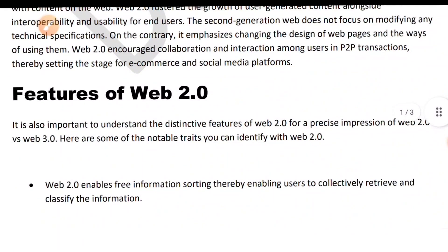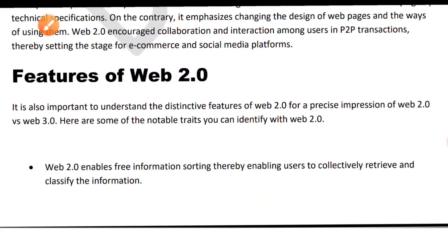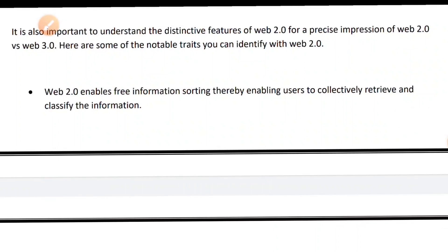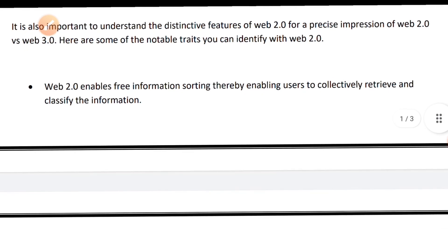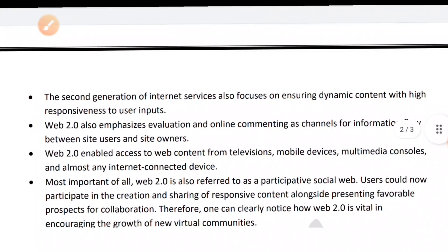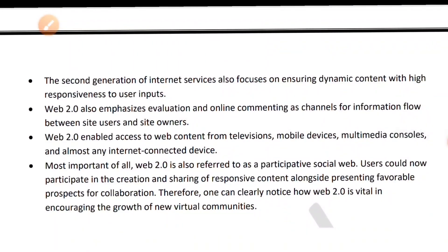Next, the features of web 2.0. It is also important to understand the features of web 2.0 for a better comparison of web 2.0 versus web 3.0. Here are some notable traits you can identify with web 2.0. First, web 2.0 enables free information sorting, thereby enabling users to collectively retrieve and classify information. Second, the second generation of internet service also focuses on ensuring dynamic content with high responsiveness to user inputs.